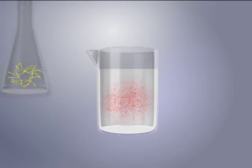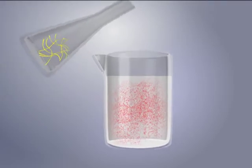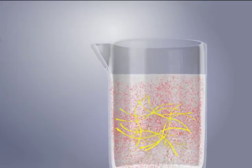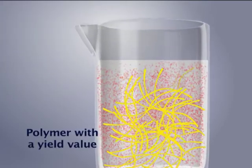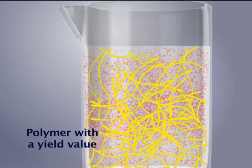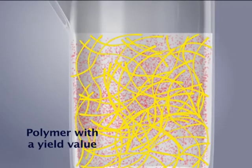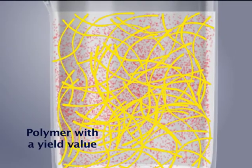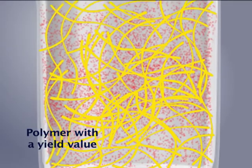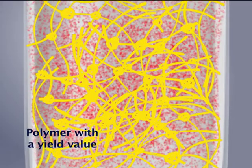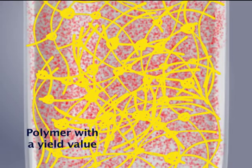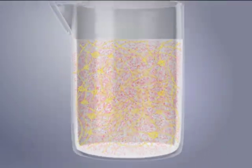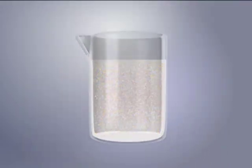A second element, a polymer with a yield value, is added. The polymer holds the drug particle with temporary knots, keeping it suspended. The drug particle will move only after a minimum amount of force is applied.